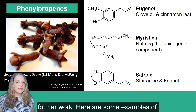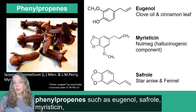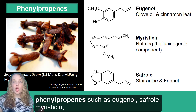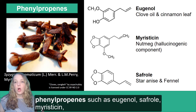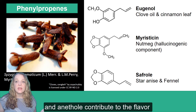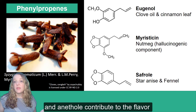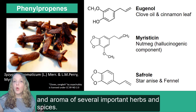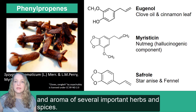Here are some examples of phenolpropenes. This includes eugenol, saffron, myristicin, and anethole, which all contribute to the flavor and aroma of several important herbs and spices.